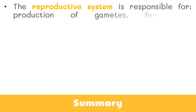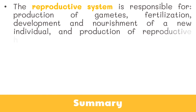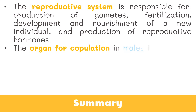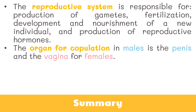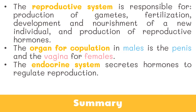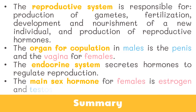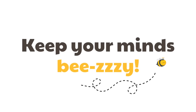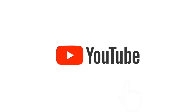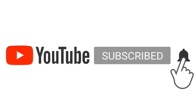Here's a quick recap. The reproductive system is responsible for production of gametes, fertilization, development and nourishment of a new individual, and production of reproductive hormones. The organ for copulation in males is the penis, and the vagina for females. The endocrine system secretes hormones to regulate reproduction. The main sex hormone for females is estrogen, and testosterone for males. We will be discussing feedback mechanisms involved in regulating processes in the female reproductive system in our next video, so stay tuned. See you on our next video, and don't forget to keep your minds busy! If you liked this video, please subscribe to our channel and hit the notification icon for more videos like this.